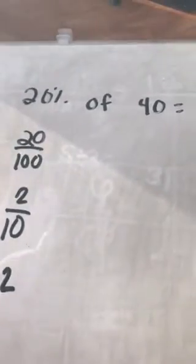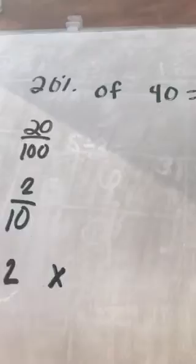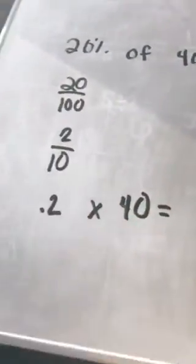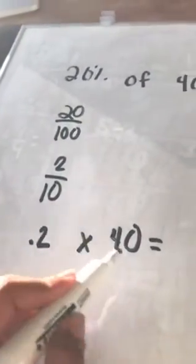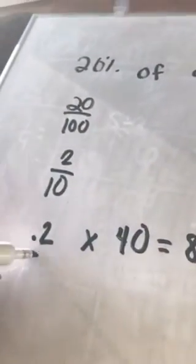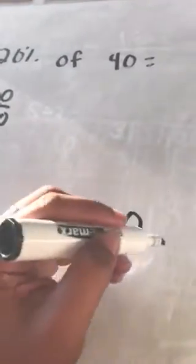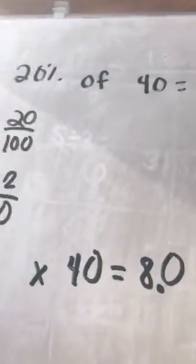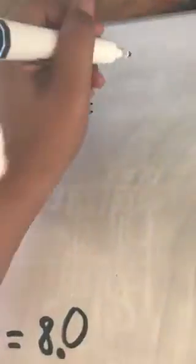And of, whenever we're trying to find a fraction or a percent of something, that means multiplication. So 0.2 of 40, then we just multiply this, just regular multiplication. 2 times 0 is 0, 2 times 4 is 8. And then there's one number behind the decimal, so there should always be one number behind your decimal. So 8. So 20% of 40 is actually 8.